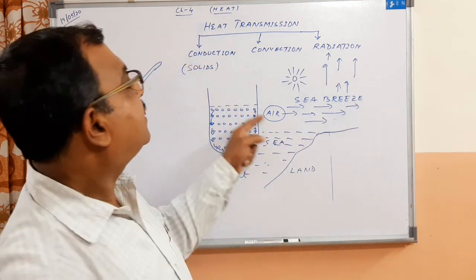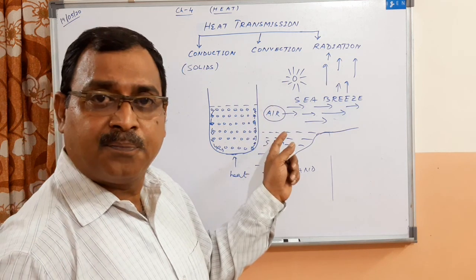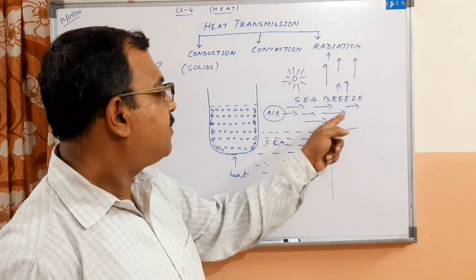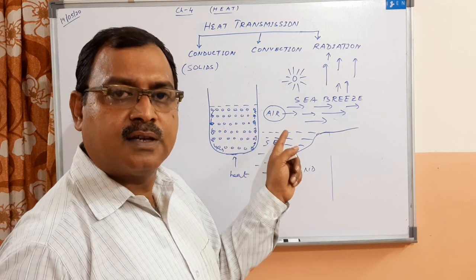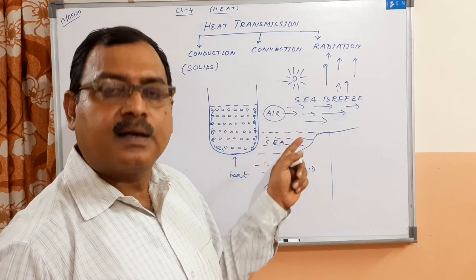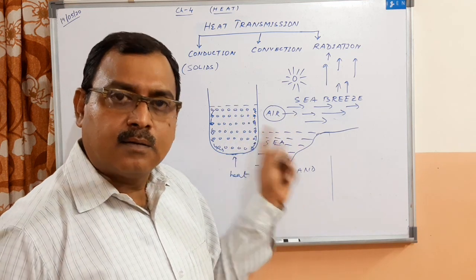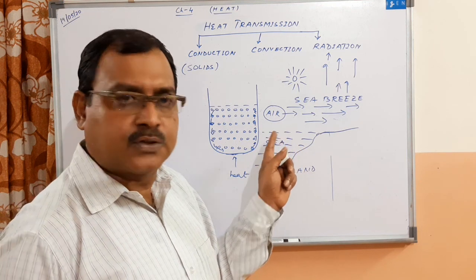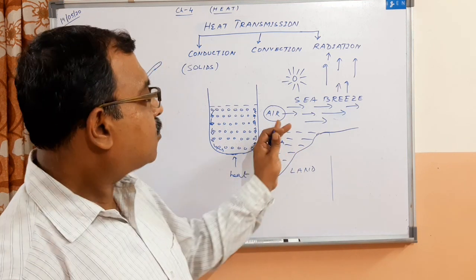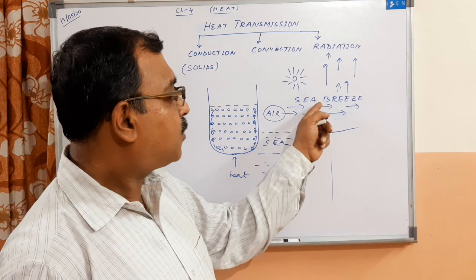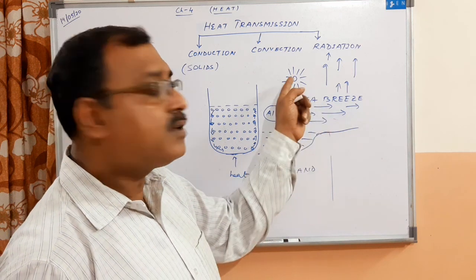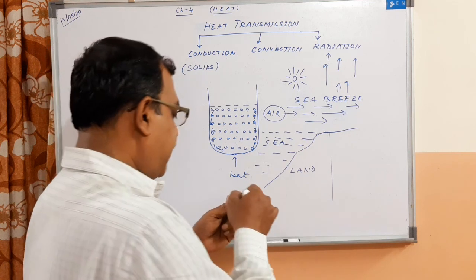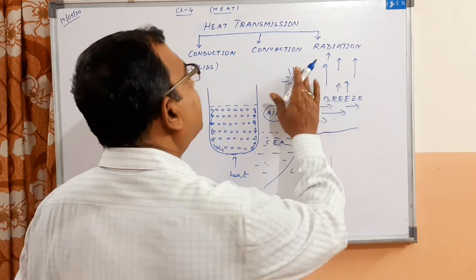Here also you can see that a convection current is set up. This is how sea breeze occurs near the coastal region. So remember, in sea breeze it happens during the day. On the other hand, what happens at night?